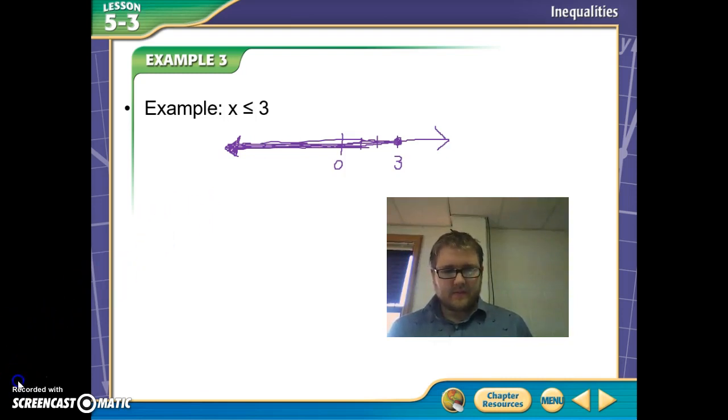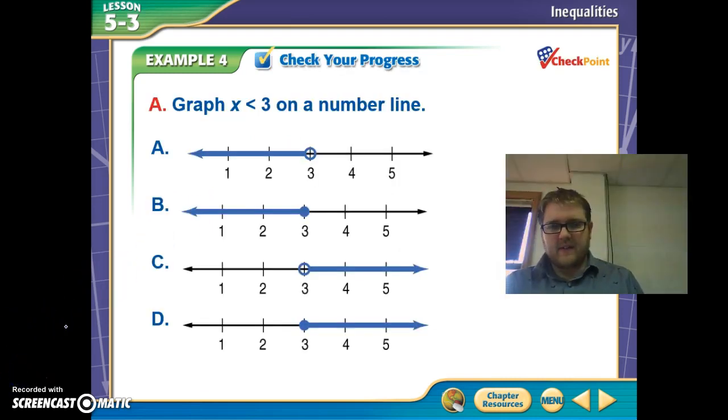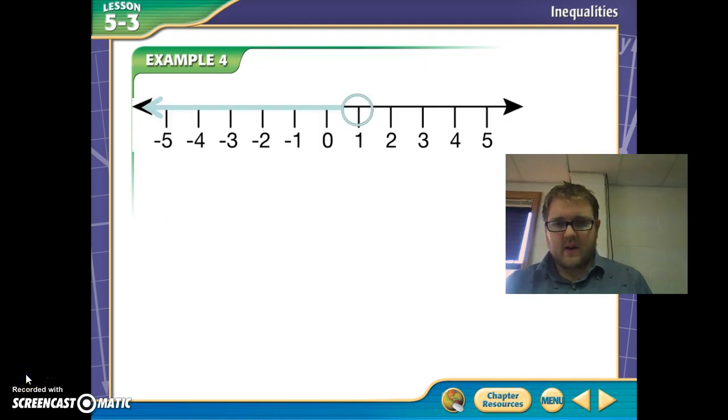So now see if you can determine which of these is the appropriate graph for X is less than 3. And now graph X is greater than 3. So let's now go backwards. Let's look at a graph and interpret what the inequality is from that. Here we can see that X is always less than 1. It's always below 1. So we're going to write X is less than 1.